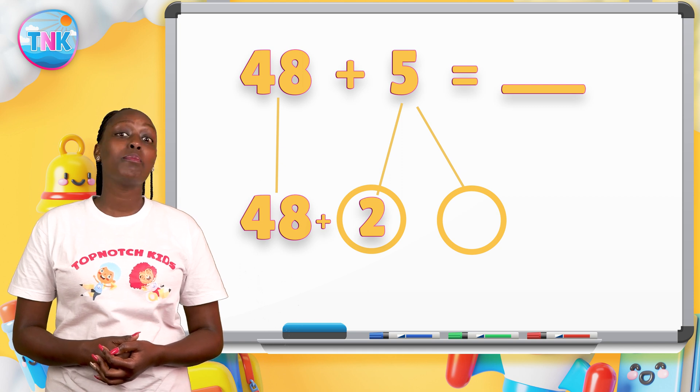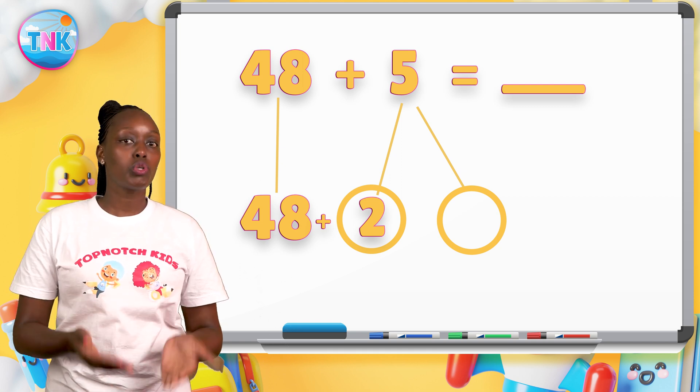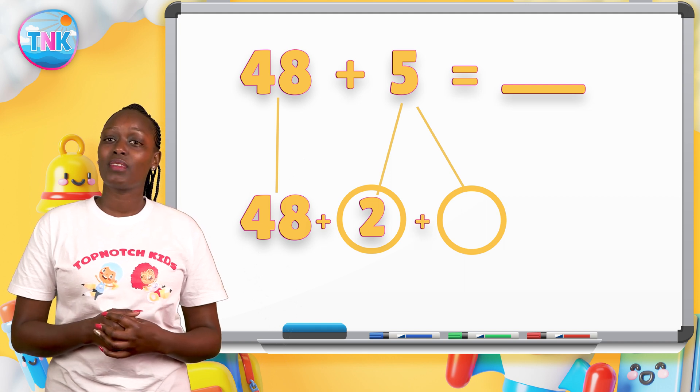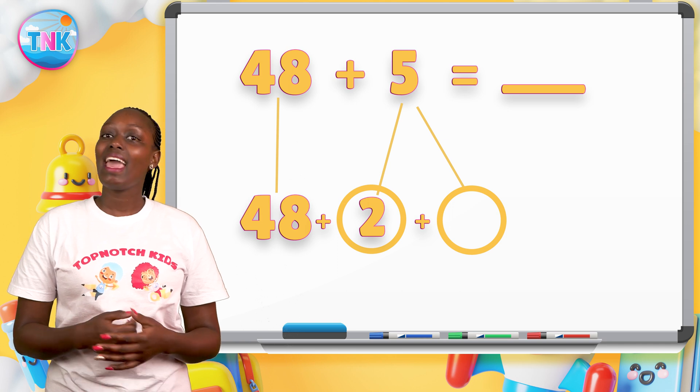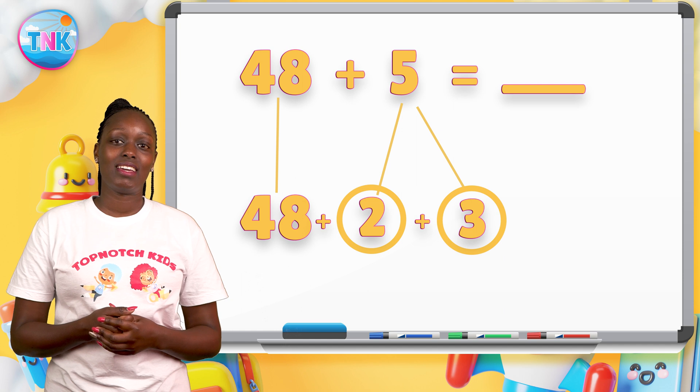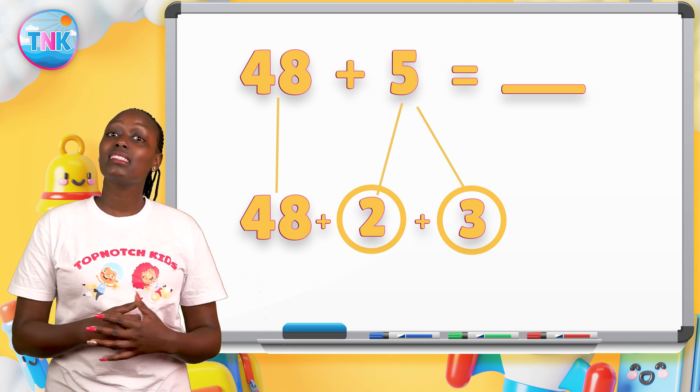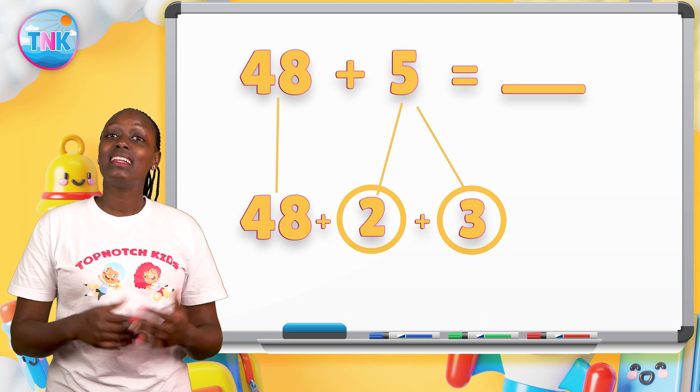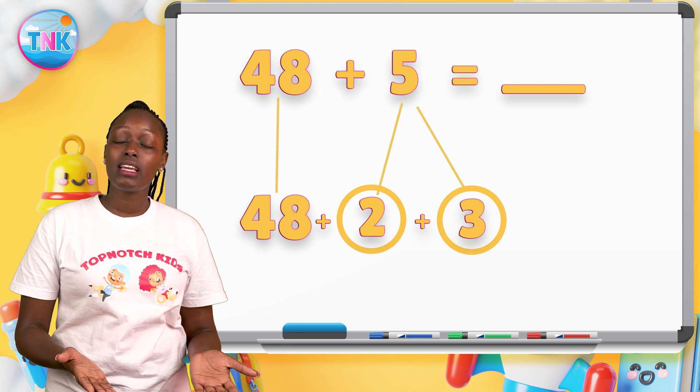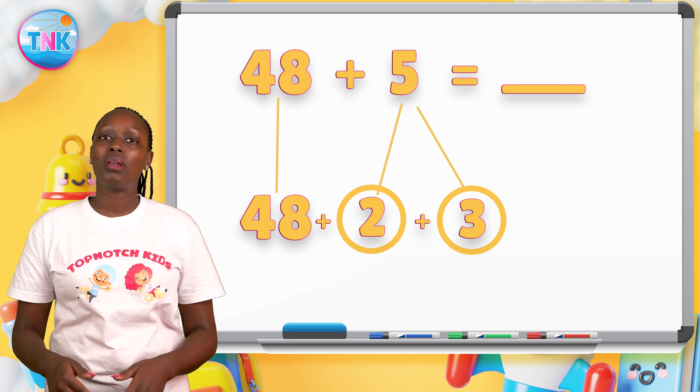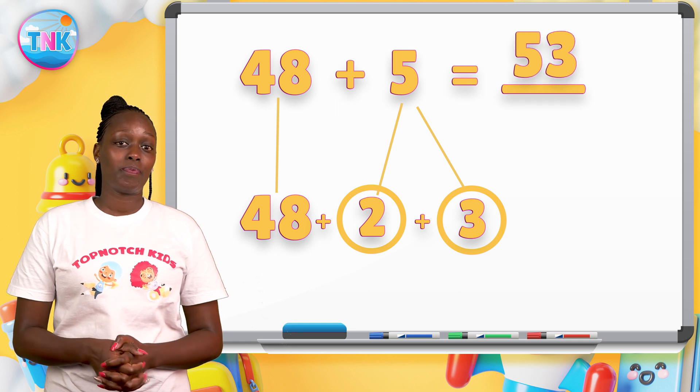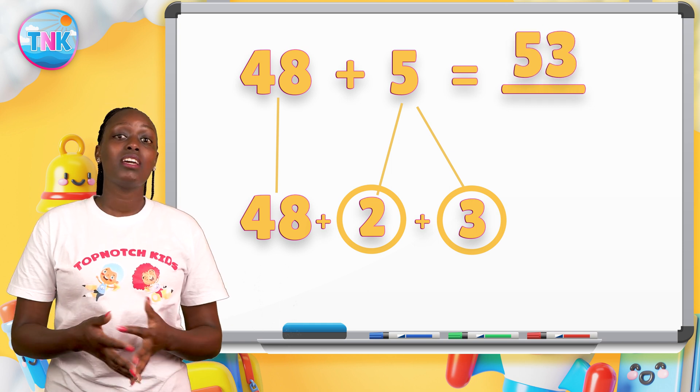Then count how many steps you need to move from two to get back to five. How many steps? Excellent! It's three steps. Write three on the other circle. Now, our sum will read forty-eight plus two plus three equals fifty-three. The answer is fifty-three.